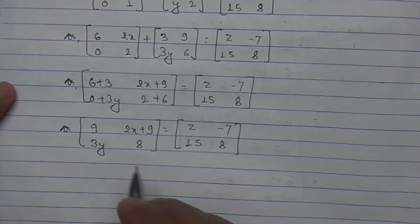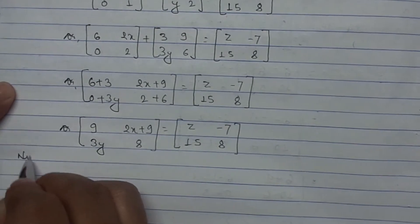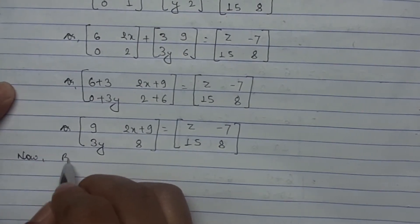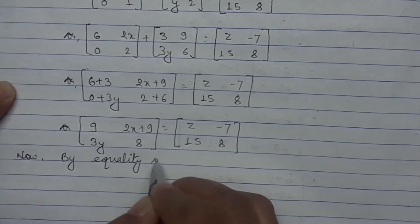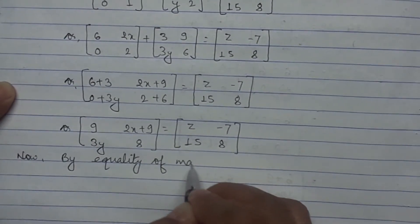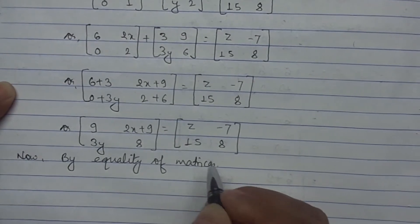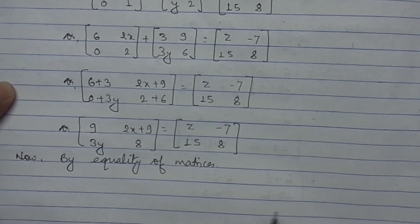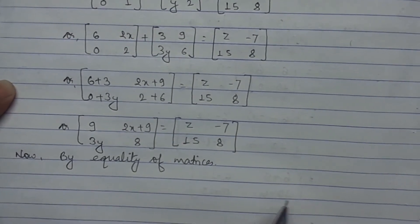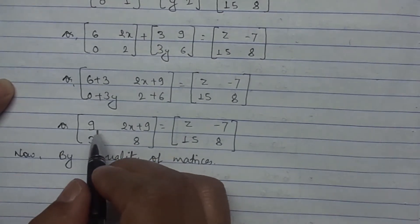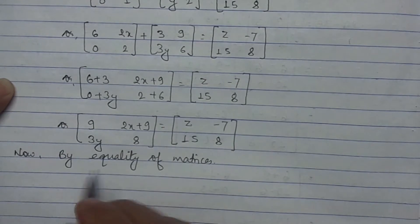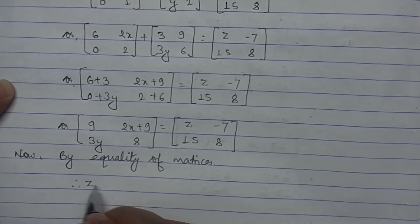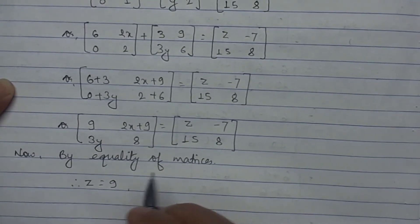Now by equality of matrices, we can equate the corresponding terms. See, this 9 equals z, therefore z equals 9. See the next one.